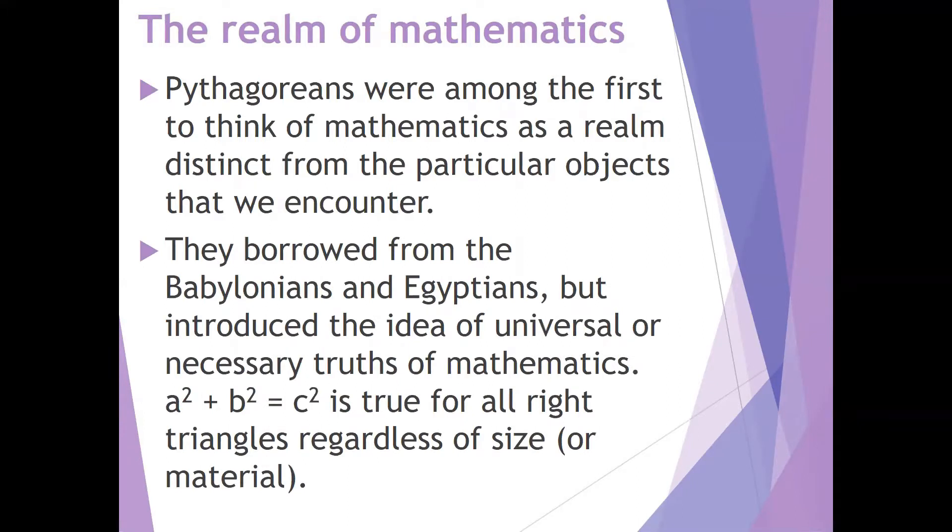So the Pythagoreans were borrowing from the Babylonians and the Egyptians, but they did introduce this idea of universal truths, or even more importantly, maybe necessary truths of mathematics. So the famous Pythagorean theorem in geometry, the idea that a squared plus b squared equals c squared, that is true for all right triangles, regardless of how large they are, regardless of what they are made of. So that is a truth that exists independently of the physical realm.